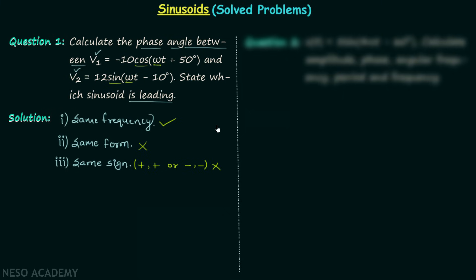It is clear that we cannot compare V1 and V2 with the forms given in the question. We can either convert sine to cosine or convert cosine to sine with the same sign in the amplitude. We know that if there is a function Vm·sin(θ) and we perform a right shift by 90 degrees, we get a new function Vm·sin(θ - 90°).